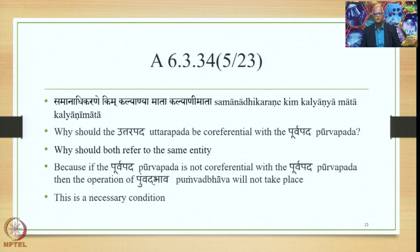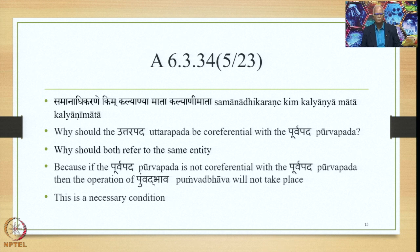Let us now look at some more counter-examples. The first counter-example question is Samanadhikarana Kim — the Prasnodhishta Shapta is Samanadhikarana. Kalyani Mata is the Udaharana which would not have been generated had Samanadhikarane not been there. The question is: why should the Uttarapada be co-referential with the Purvapada, that is, why should both refer to the same entity? Because if the Purvapada is not co-referential with the Uttarapada, the operation of Pumbad Bhava will not take place. This is a necessary condition.